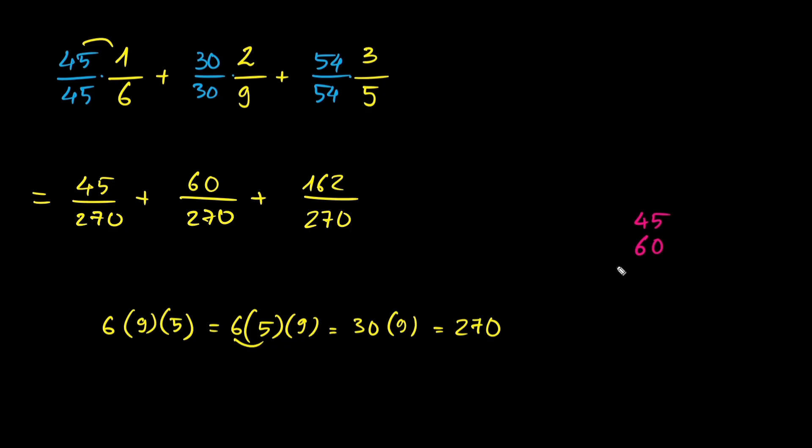Now all we need to do at this point is add the numerators of the three fractions. So we have 267 over 270. Now we could simplify this fraction. Notice that both the numerator and denominator are divisible by 3.